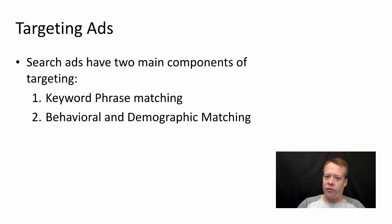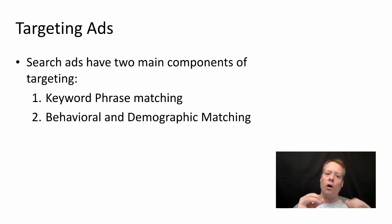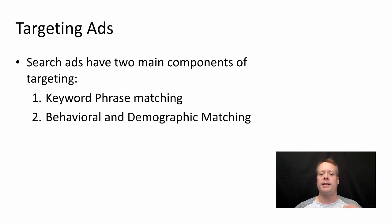One is the keyword phrase matching — what words do you want your ad shown against? And then you can also specify behavioral and demographic components as well. You can tell Google that you only want to look at people in a certain region or area.